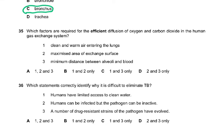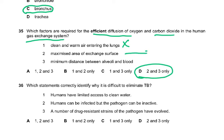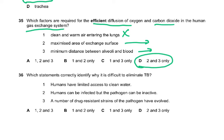Question 35. Which factors are required for efficient diffusion of oxygen and carbon dioxide in the human gas exchange system? It is two and three only: maximized surface area for exchange and minimum distance between alveoli and blood. Clean, warm air entering the lung doesn't matter here.